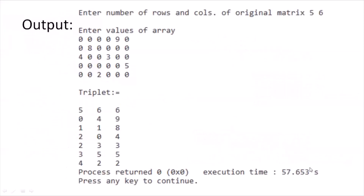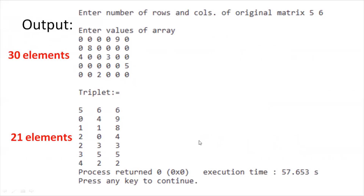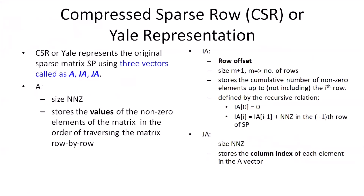The output shows that the 5×6 sparse matrix we entered requires 30 elements in the normal 2D representation, whereas the triplet representation requires only 21 elements. Therefore, for a sparse matrix, this implementation is storage efficient. Moving on to the next type of representation — the Compressed Sparse Row or CSR representation.